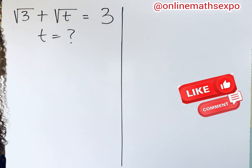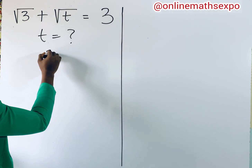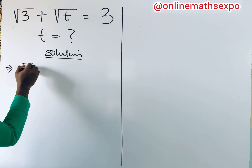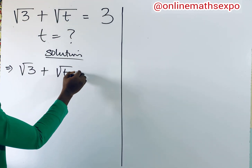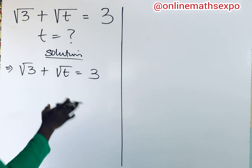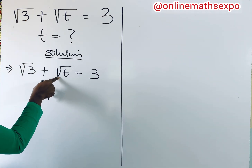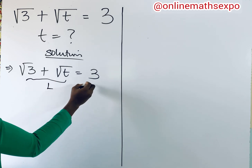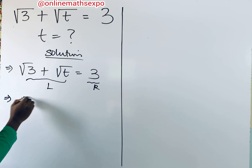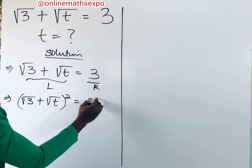We need to find the value of t. So what we do is rewrite what we have: the square root of 3 plus the square root of t is equal to 3. To solve further we need to remove these radicals, and to do that we square both sides. So we have root 3 plus root t, all raised to the power of 2, is equal to 3 squared.